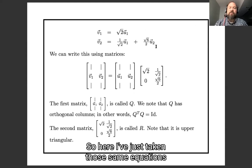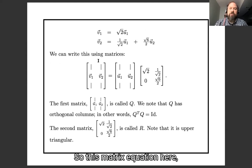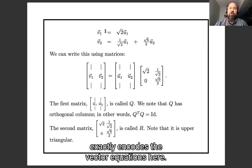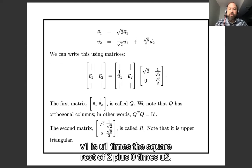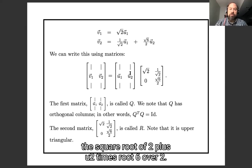So here I've just taken those same equations and I've rewritten them using matrices. So this matrix equation here exactly encodes the vector equations here. v1 is u1 times the square root of 2 plus 0 times u2, and v2 is u1 times 1 over the square root of 2 plus u2 times root 6 over 2.